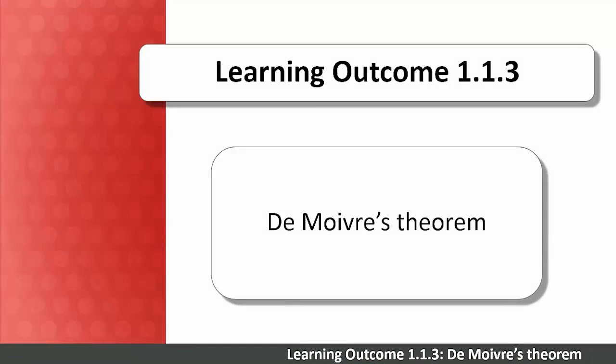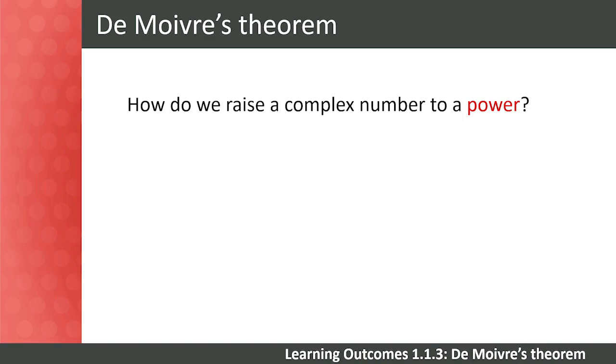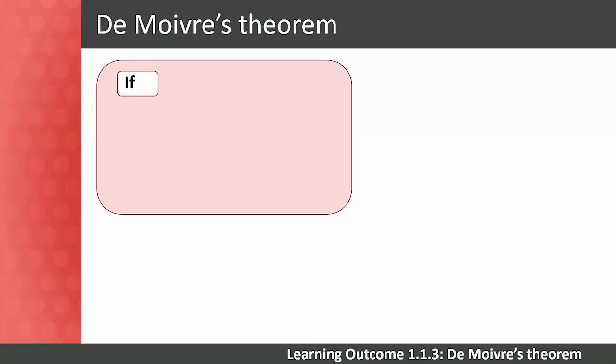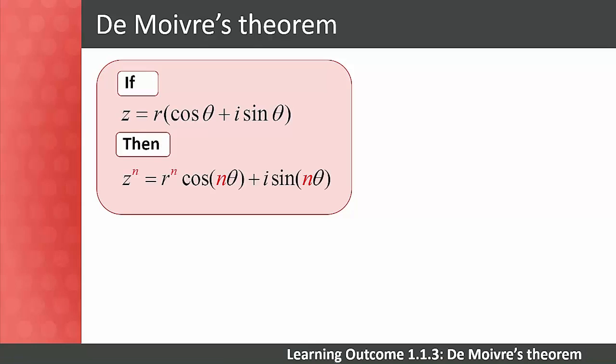Learning outcome 1.1.3: De Moivre's theorem. Now how do we go about raising a complex number to a power? To do this we have to use De Moivre's theorem. This theorem is brand new content in level four, so lecturers need to make sure that students really understand how to apply it. What does De Moivre's theorem state? If z equals r times cos theta plus i sine theta, then z to the power of n equals r to the power of n times cos n theta plus i sine n theta. The alternative notation in cis form is given here.